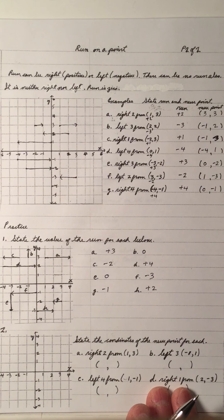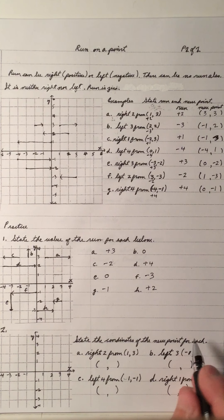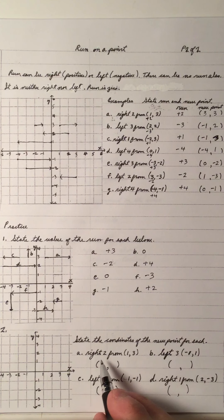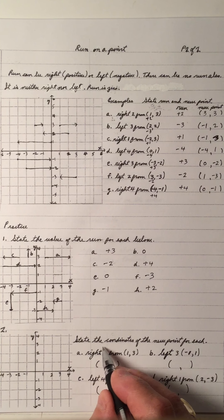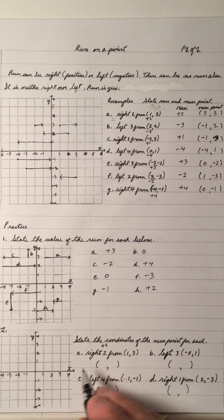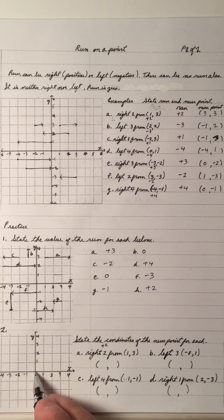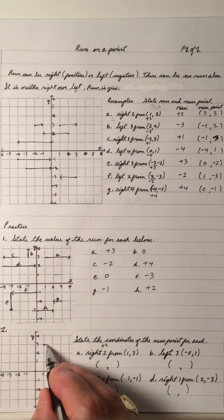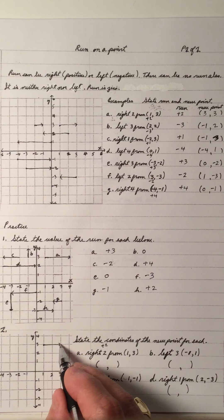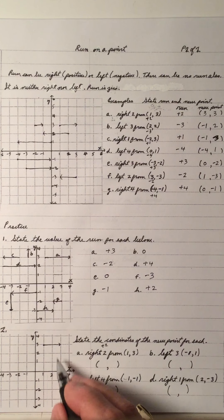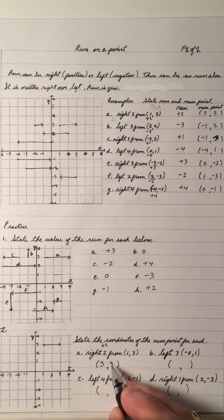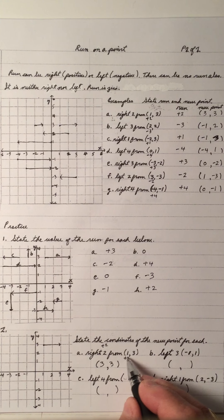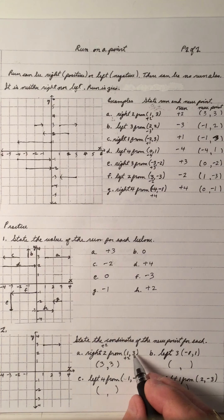Number two, more practice. State the coordinates of the new point for each. We can do it two ways by plotting. Right two is a plus two, so from (1, 3) — the point is right here: x is one, y is three. Moving right two, the new point is x is three, y is three. Or we can add plus two onto the x-coordinate to get three. The y doesn't change.